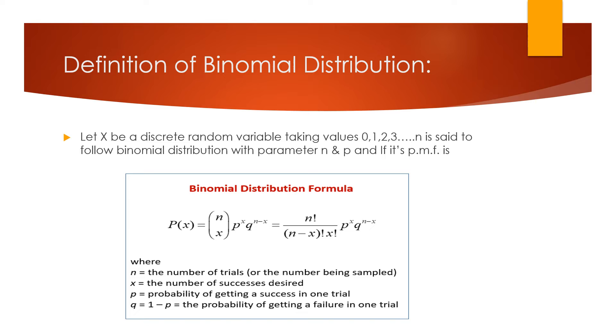This equals n factorial divided by (n-x) factorial times x factorial times p raised to x times q raised to n minus x, where n is the number of trials or the number being sampled.